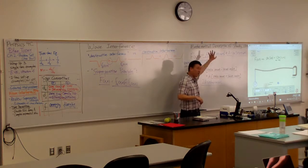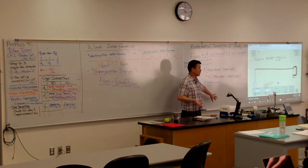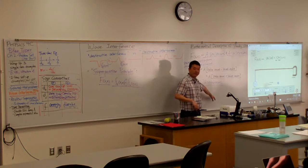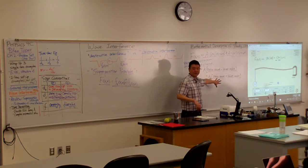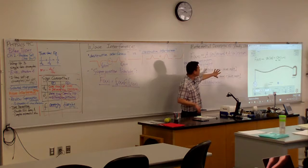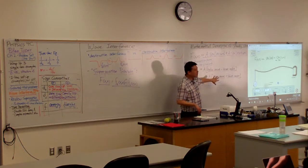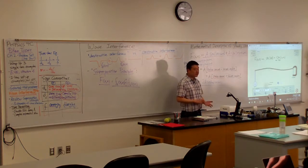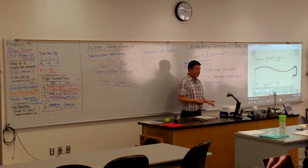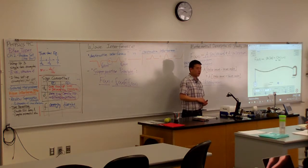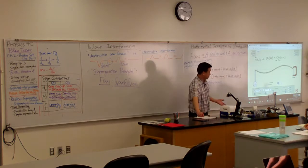This is Physics 4A material — I don't have any homework problems on this. If you need to review it, look at University Physics Volume 1. What we are going to look at in this class is interference of phenomena you see with light.